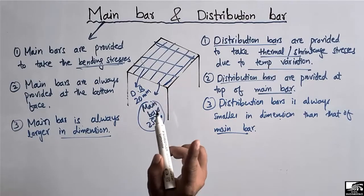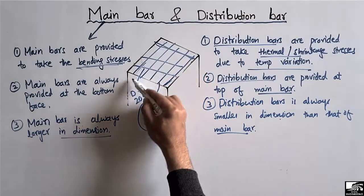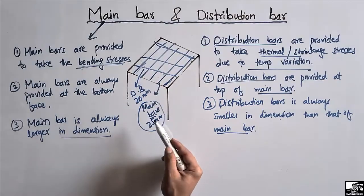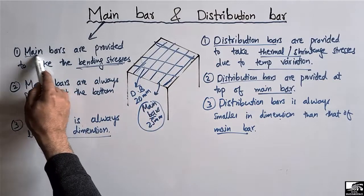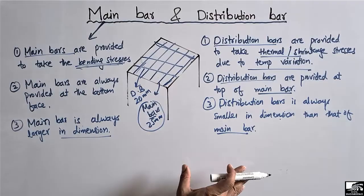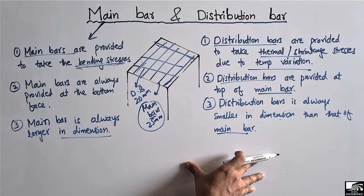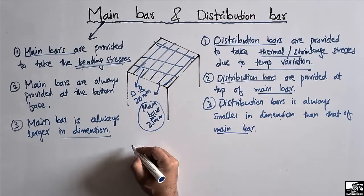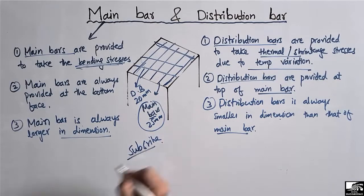If we have a one-way slab, these are the main differences. However, if we have a two-way slab, then the distribution bars play the same role as the main bars. So these are the main differences between the main bar and the distribution bar. Hope you guys understand, and don't forget to subscribe to our channel for daily 7 Engineering videos. Thank you for watching.